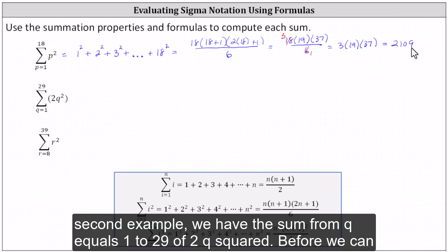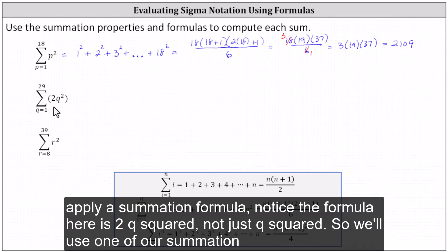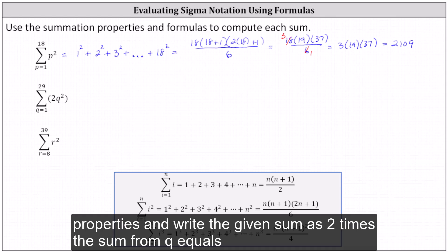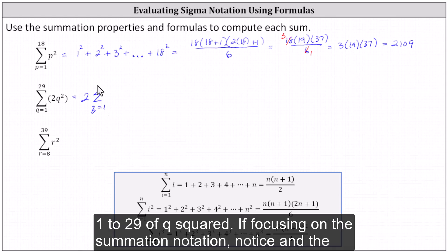For the second example, we have the sum from q equals 1 to 29 of 2q squared. Before we can apply a summation formula, notice the formula here is 2q squared, not just q squared. So we'll use one of our summation properties and write the given sum as 2 times the sum from q equals 1 to 29 of q squared.